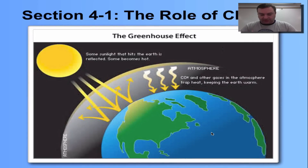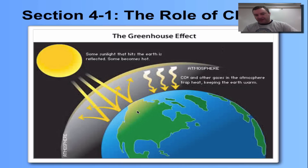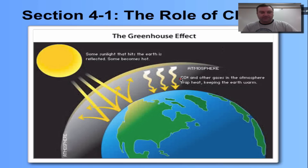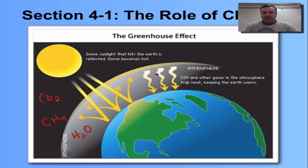This is a picture of the greenhouse effect. Sun rays hit our planet and some of it is reflected back. Up in our atmosphere we've got CO2. Remember, we're going to have carbon dioxide, methane, and water vapor all in the atmosphere, and that's going to trap some of this heat. It acts like a blanket to keep us warmer.